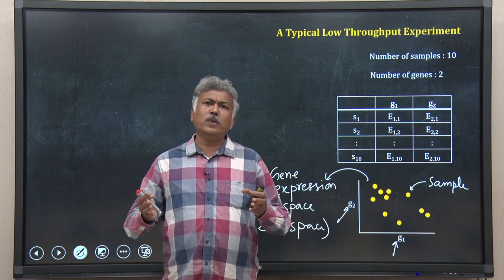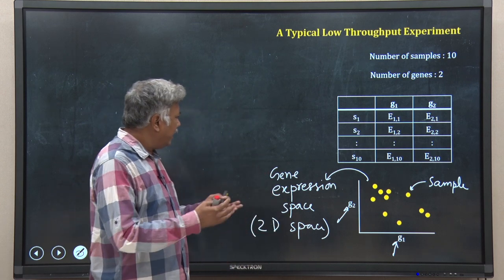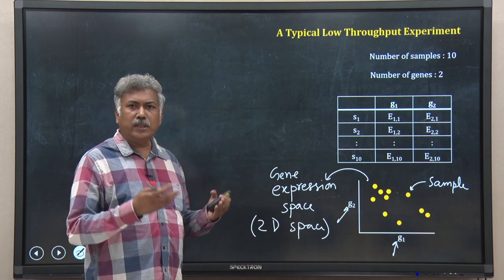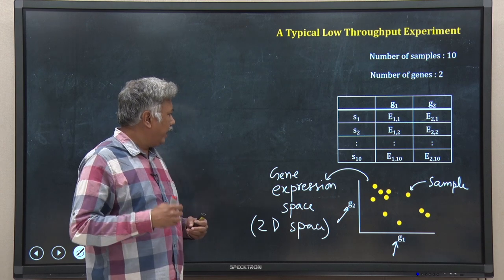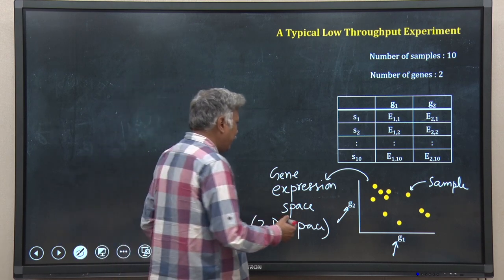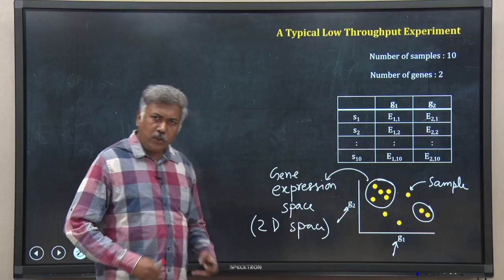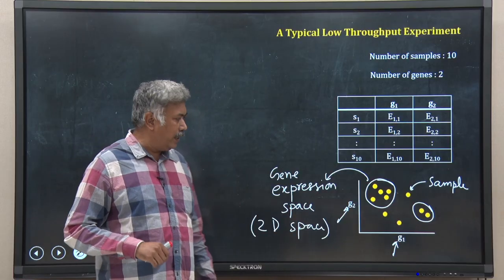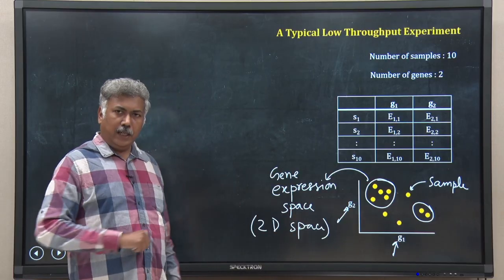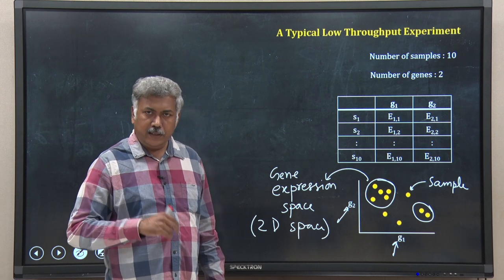This is how you usually visualize data, and then you may use some statistical test or some other analysis — for example, cluster analysis — to find clusters in the samples. You can perform conventional data analysis on this data. Now let me add another gene, a third gene.